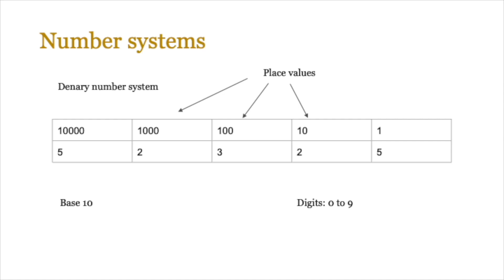Let's start by revisiting number systems and getting these fresh in our memory. We have the denary number system, which is based on base 10 — because we humans have 10 fingers and learned to count on those. The digits used are 0 to 9, and it works with place values going up in tens: units, tens, hundreds, thousands, ten thousands, and so on.